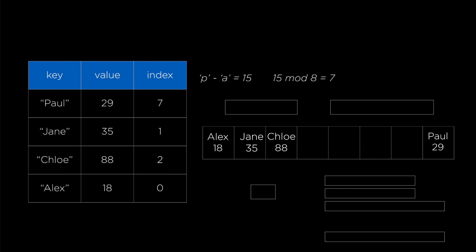What I just showed you is already a hash table. To construct a hash table you need an array, a dictionary you want to represent, and a way to decide which index of the array you want to use for each key-value pair. Another way to describe this is to say we need a function — call it h1 — that turns each key, whether it's a string or anything else, into an index of the array. This function is usually called a hash function, and that's why this whole thing is called a hash table. But this particular hash function might not be ideal, for a few reasons.